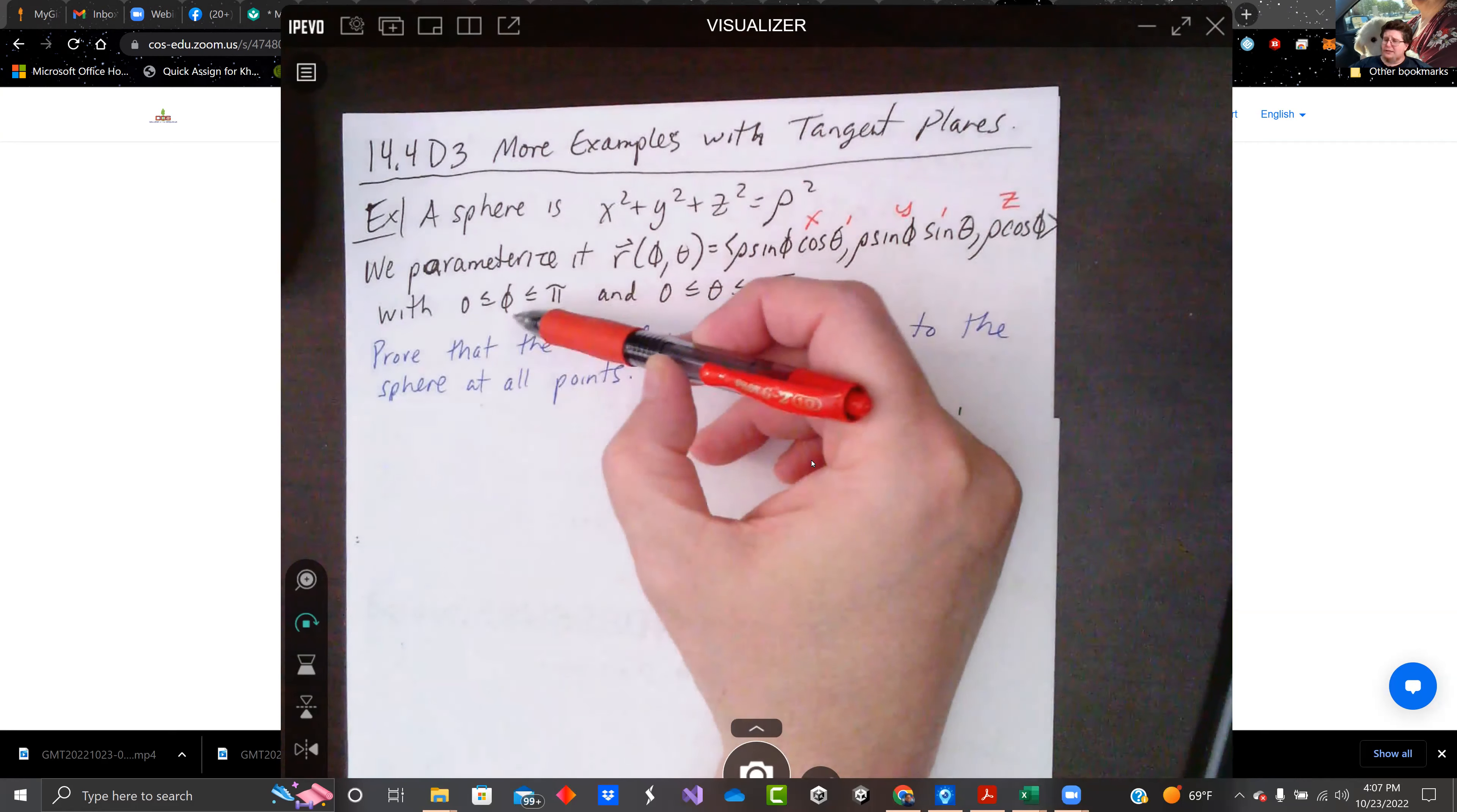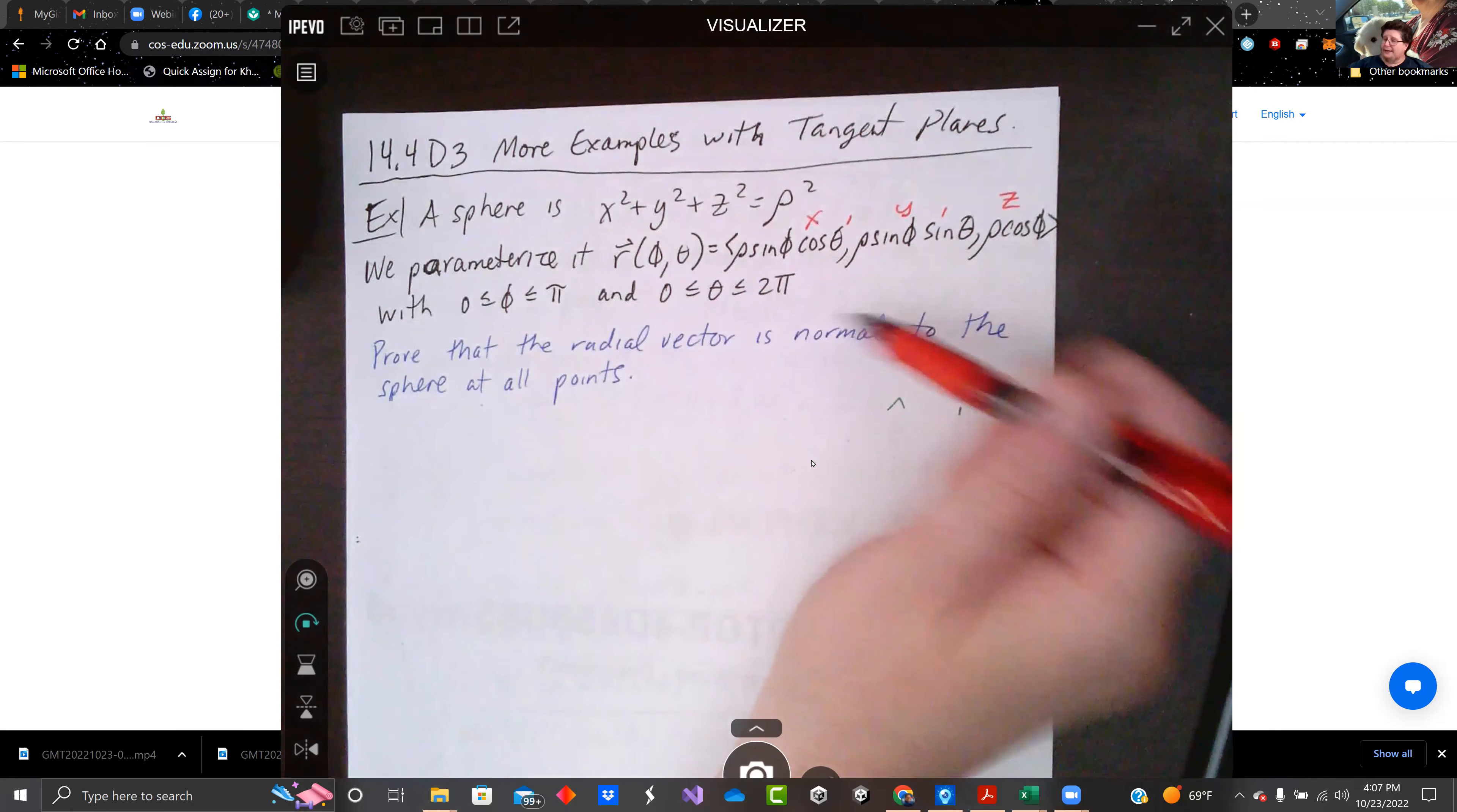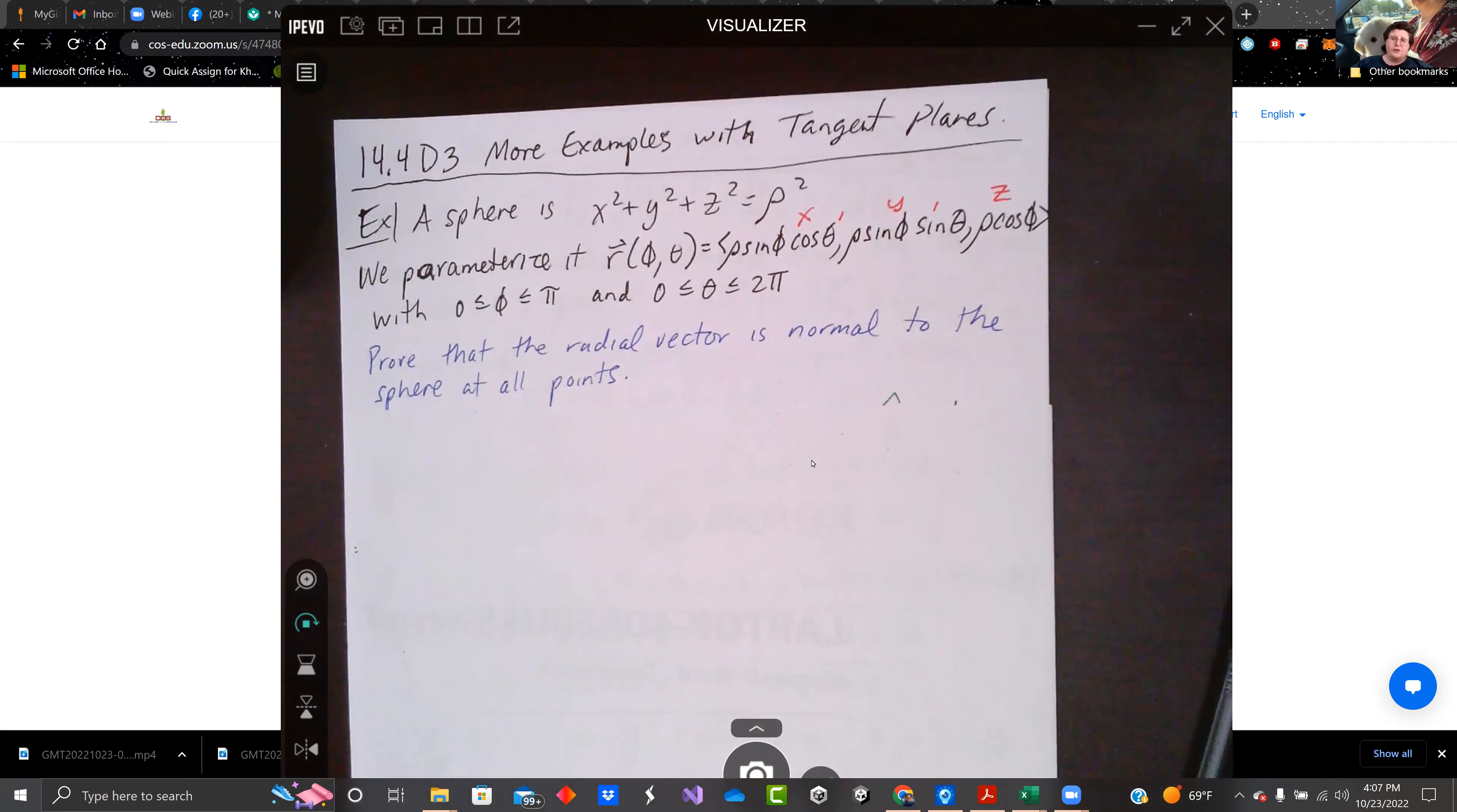I recall when spherical coordinates, that was zero to pi for phi and zero to two pi for theta. And we're going to prove that the radial vector is normal to the sphere at all points.